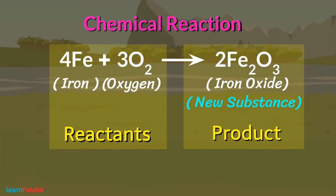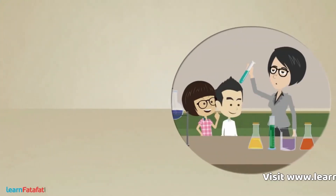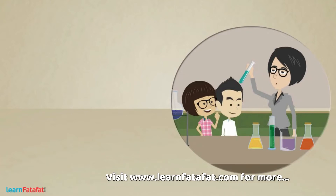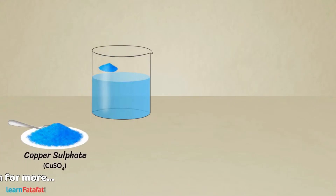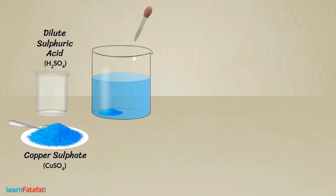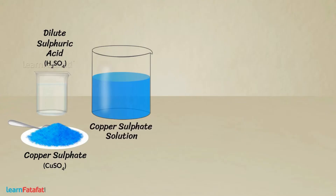Take another example for understanding it more clearly. If you want to perform this activity, take help of your teacher. Please don't do it yourself. Take some water in a beaker, dissolve a tablespoon of copper sulphate in it and add a few drops of dilute sulphuric acid to it. It will form a blue coloured solution — it is copper sulphate solution. Now take a polished iron nail and put it inside the beaker.